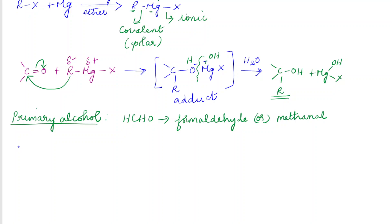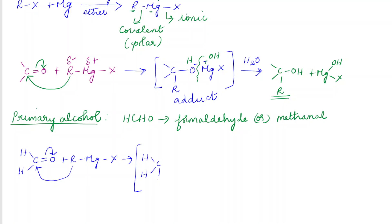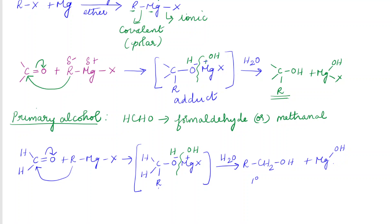In the reaction, formaldehyde (H-C=O with H) reacts with RMgX. The R group attacks the carbonyl carbon, the electron pair shifts to oxygen, and we get an adduct: H₂C(R)-O⁻MgX⁺. On further hydrolysis, the bond breaks and hydrogen and OH are added, giving the final product R-CH₂-OH — a primary alcohol — plus MgOHX.